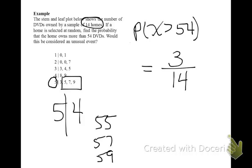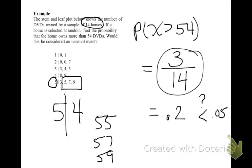The probability is 3 out of 14, or 0.2 as a decimal. If our value is less than 0.05, it's considered an unusual event; if it's greater than 0.05, then it's not unusual. Here, 0.2 is bigger than 0.05, so this would not be considered an unusual event — it is a likely event.